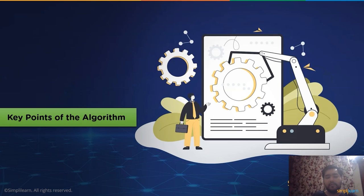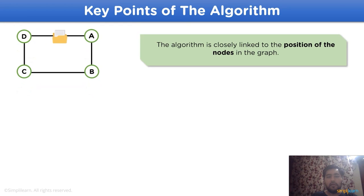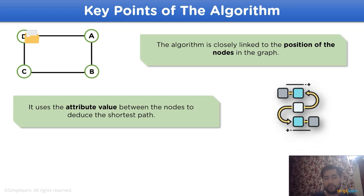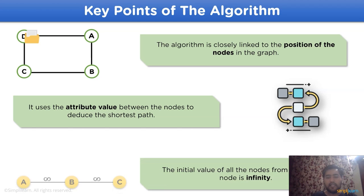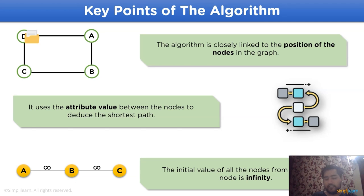Now let's move on to some key points regarding the algorithm. The first key point is the algorithm is closely linked to the position of the nodes in a graph. The next point is the attribute value between the nodes of a channel is used to deduce the shortest path. As for the last point, the initial value of all the nodes from the current node is assumed to be infinite.